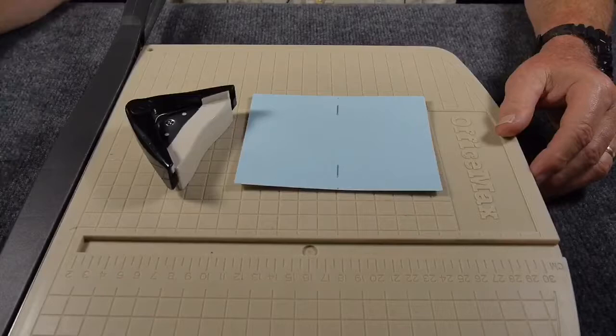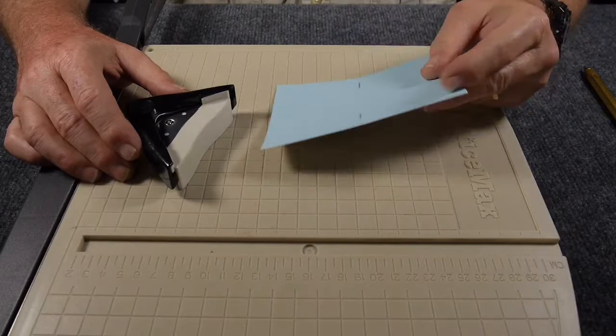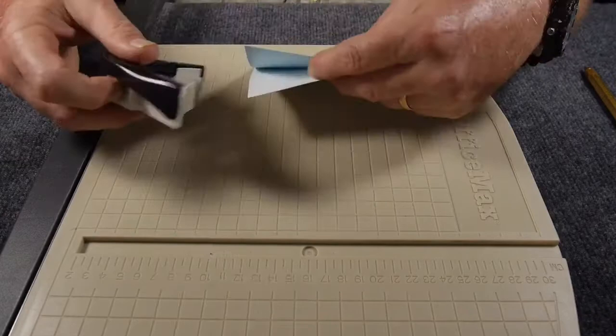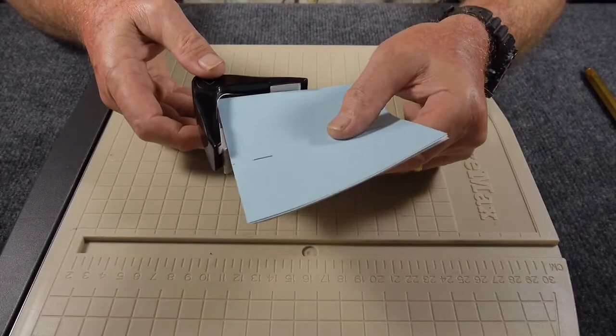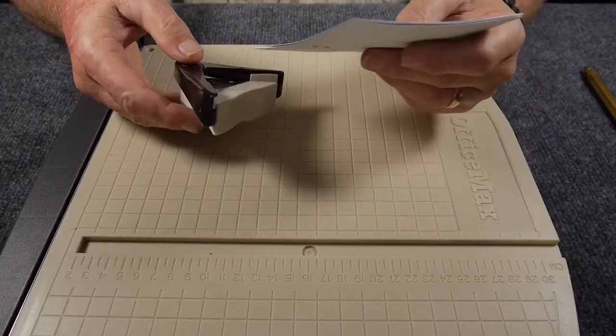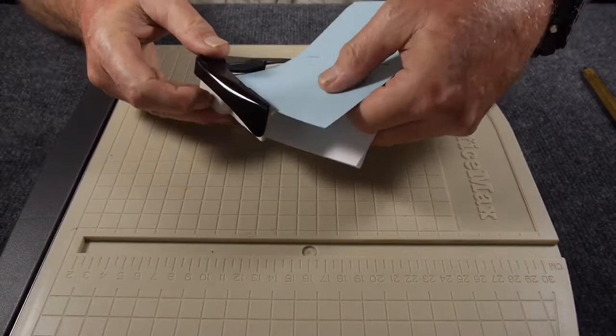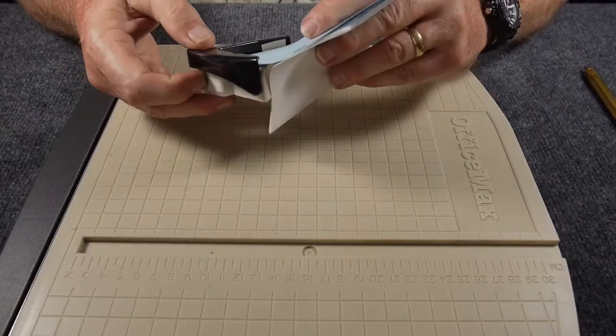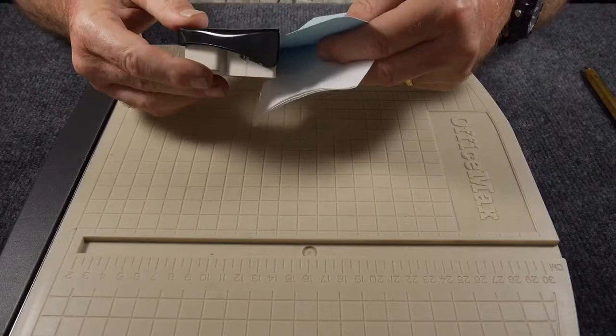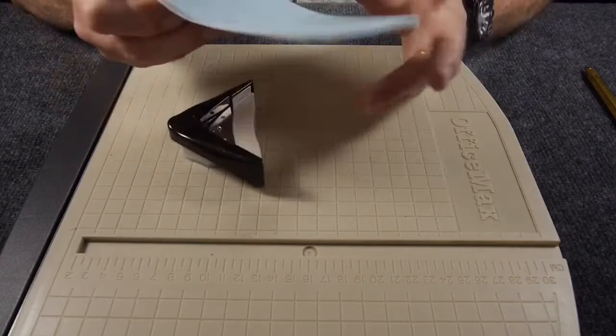So before I fold the book and call it done, I'd like to go ahead and trim the corners. And it's a convenient time to do so before you fold it. I'm going to put the corners in the corner punch. I don't know if you know how these work, but you just simply put it in there and then squeeze it and you got a nice half round corner. I like to do the covers separate from the inner paper only because these little punches are kind of limited by how much paper they will cut at any one time.